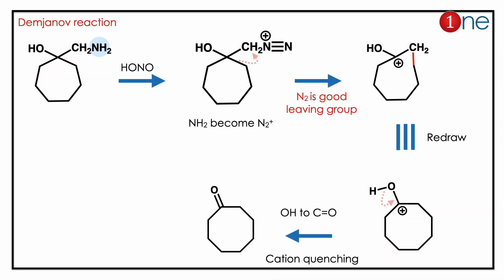Basically, it's a Demyanov reaction — it's a kind of Wagner-Meerwein rearrangement, or you can say a Pinacol-type rearrangement. The first step will be diazotization. Diazotization converts the NH2 group into N2+. Here, N2 is a very good leaving group.